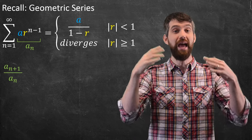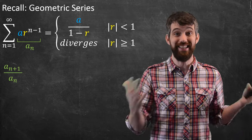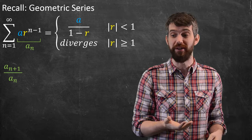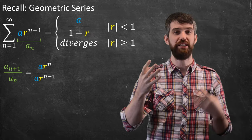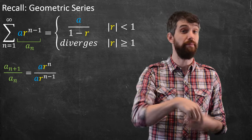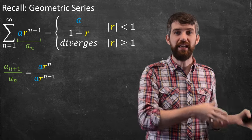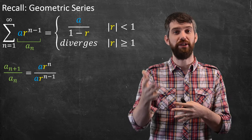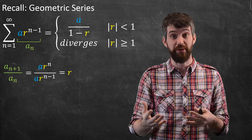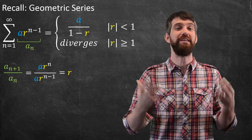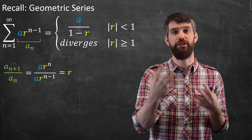I want to consider a_{n+1} divided by a_n. The whole point of a geometric series is that this is just going to be that ratio r. In the numerator, if I plug in n+1 into our formula, I get a·r^n. In the denominator, a·r^{n-1}. The a's cancel and most of the r's cancel, and I'm just left with r. So for a geometric series it's defined by this fixed ratio r — the ratio of a_{n+1} to a_n is just r.